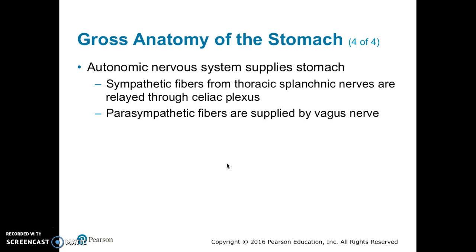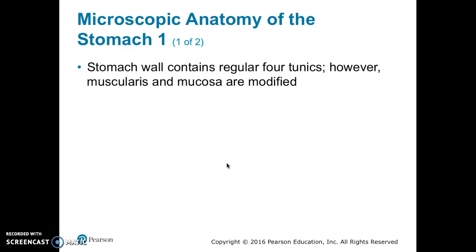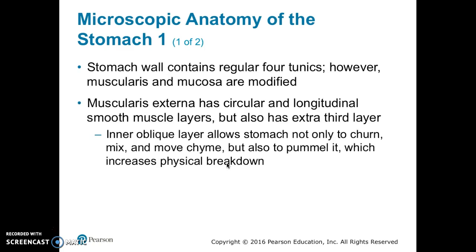The autonomic nervous system supplies the stomach. Sympathetic fibers from the thoracic splanchnic nerves are relayed through the celiac plexus. Parasympathetic fibers are supplied by the vagus nerve. The blood supply to the stomach comes from the gastric and splenic branches of the celiac trunk, and the veins are those of the hepatic portal system.